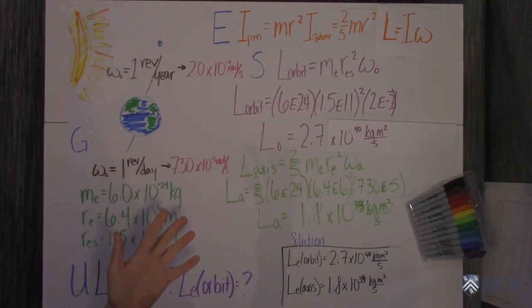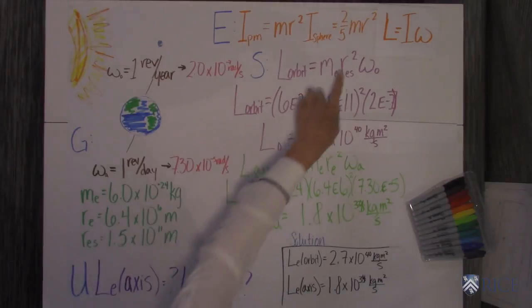And then when it's spinning, we want to know the moment of inertia of a sphere, which is two fifths mr squared.